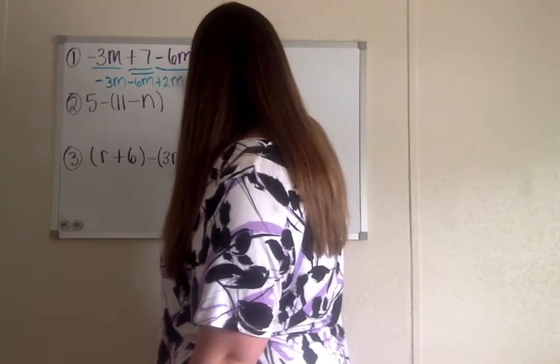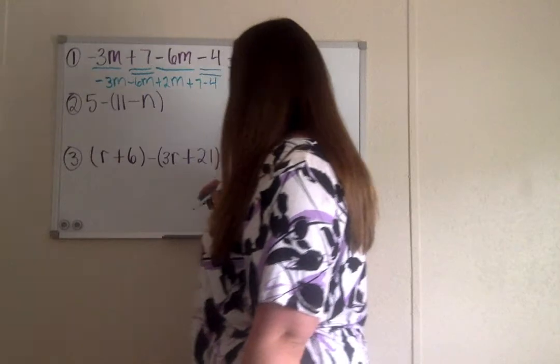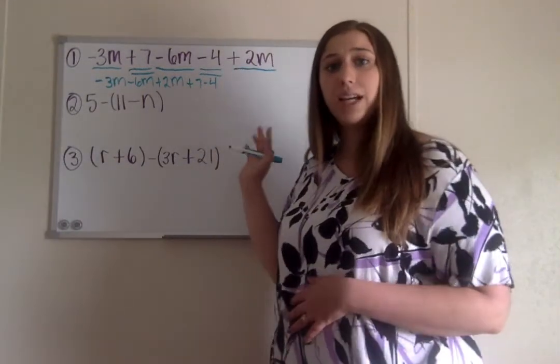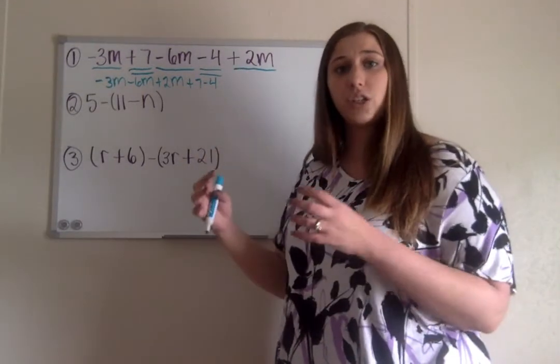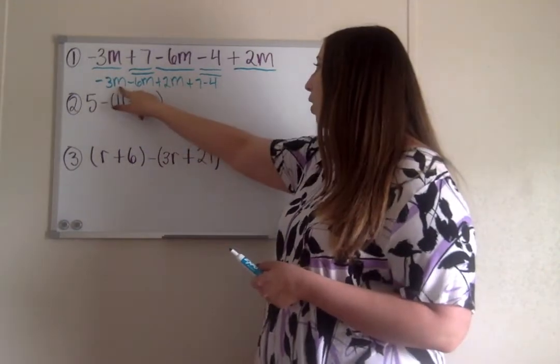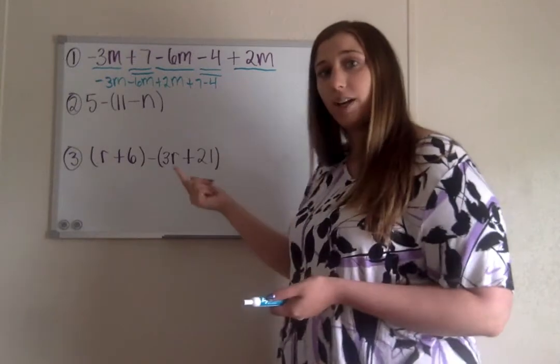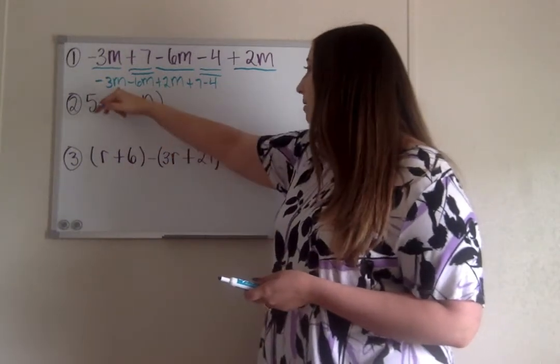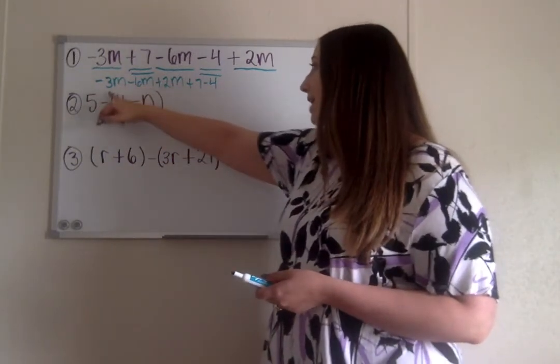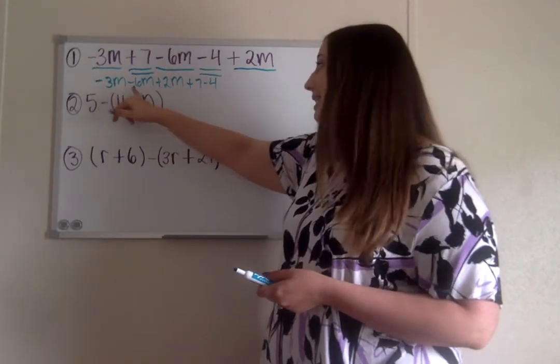And then we're gonna also add 7 and then subtract 4. All I did there was I wrote my like terms next to each other. This way now I have all of my m's written next to each other and then the numbers without the variables.